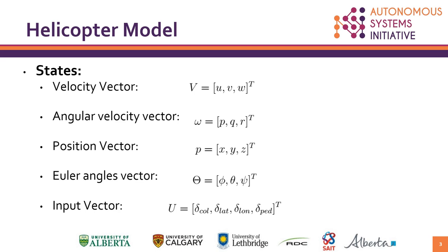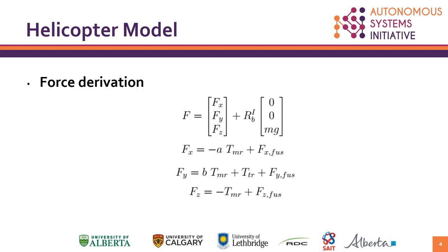From a control point of view, we would have the velocity vector, the angular velocity vector, the position vector, and the Euler angles as the states, and we would have four collective, lateral, longitudinal, and pedal inputs as the input to the controller.